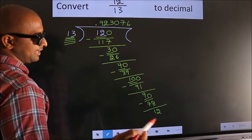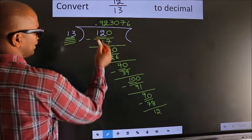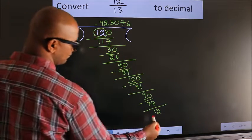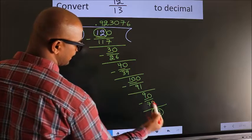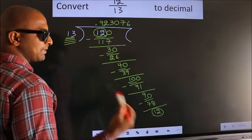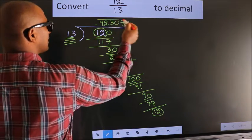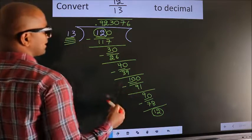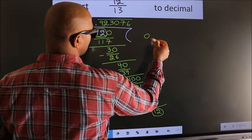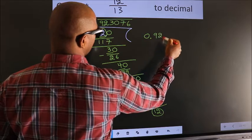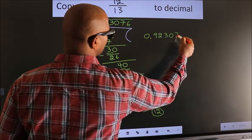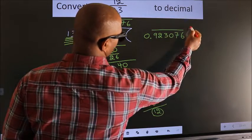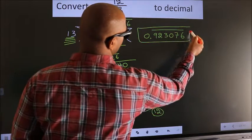Now, here you observe: we had 12 here, and we got 12 again. That means we get a bar on these numbers. Therefore, our answer is 0.923076 with a bar on these numbers. This is our answer.